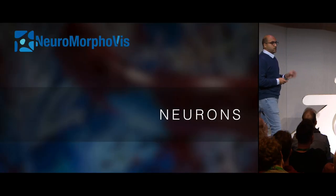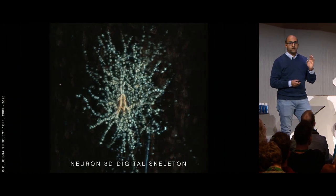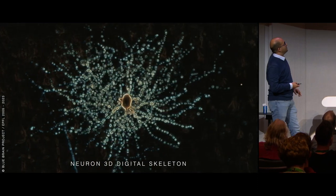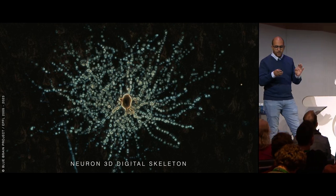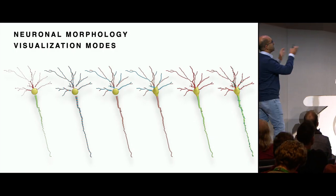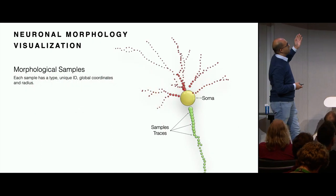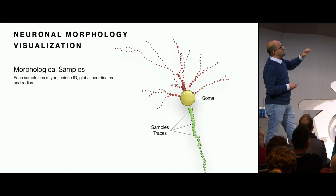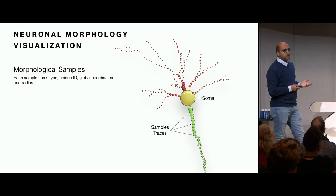Let's start with neurons. This is a 3D slice of a neuron as reconstructed by optical microscope - what we get from the lab. We have to build tools to visualize it in every detail. In NeuroMorphoVis we implemented different visualization modes. We have the soma - the cell body - and then some samples or vertices representing the arborization of the neuron. That's one visualization mode.